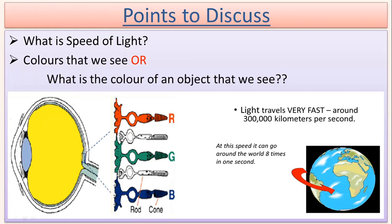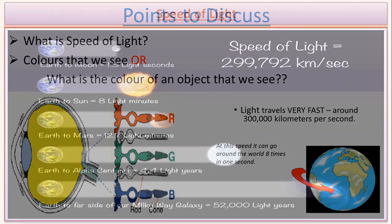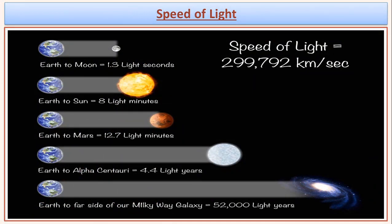Welcome back students. In this video, I am going to discuss about the speed of light and the color of different objects that we see around us. The speed of light is around three lakh kilometers per second. In exact number, it is 2,99,792 km per second. This speed of light is in vacuum.